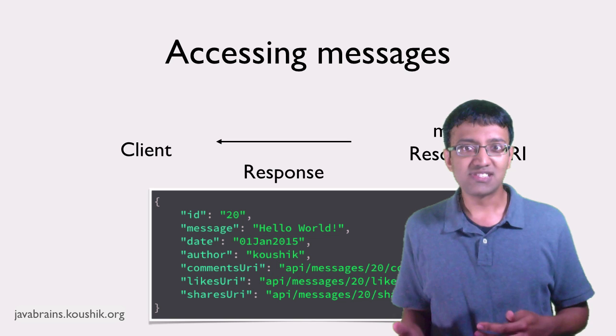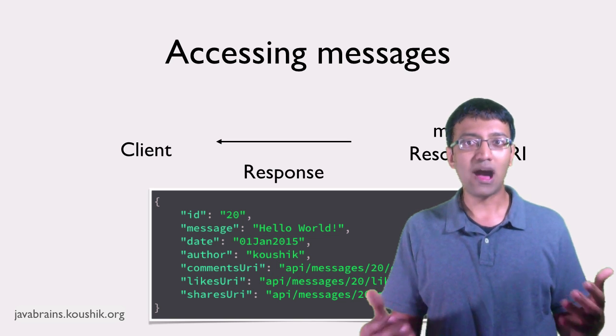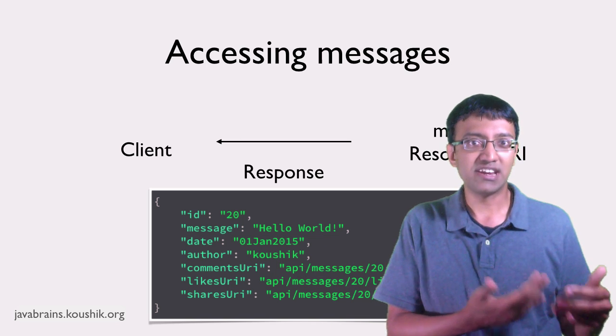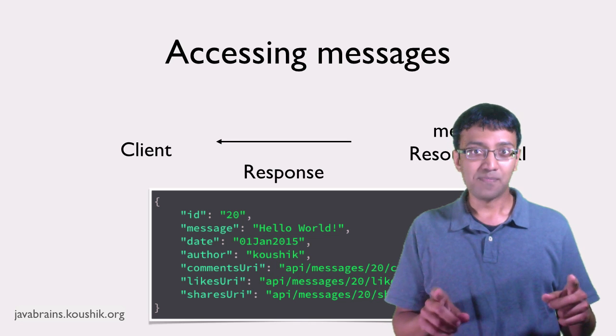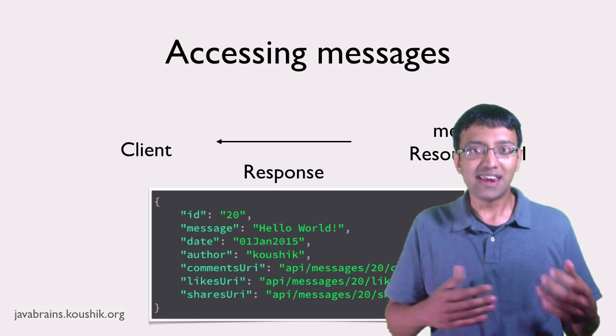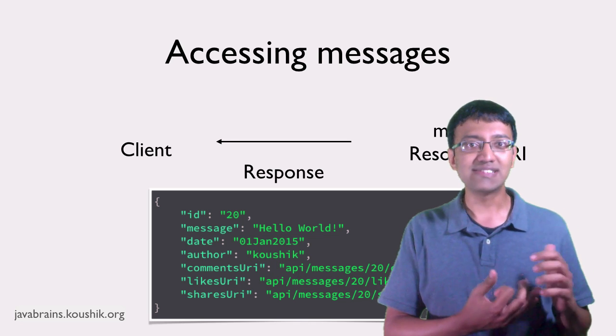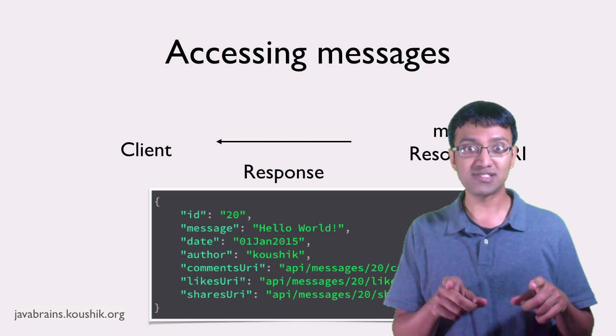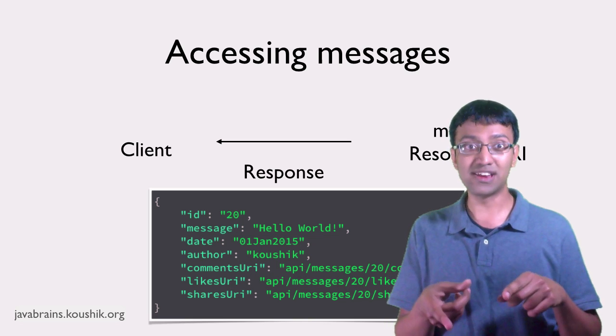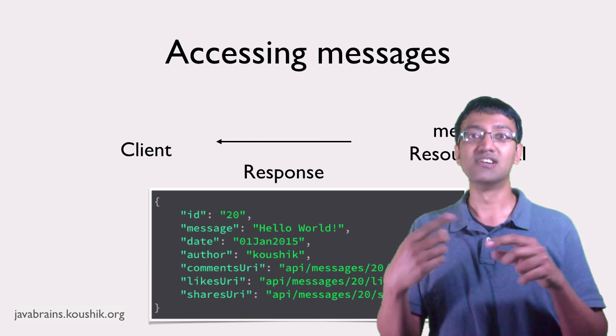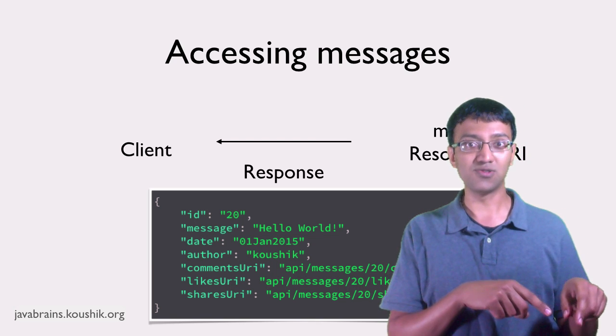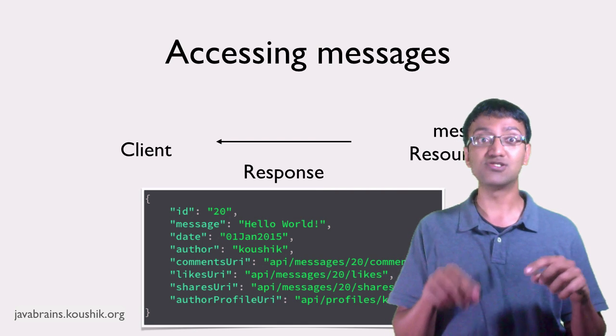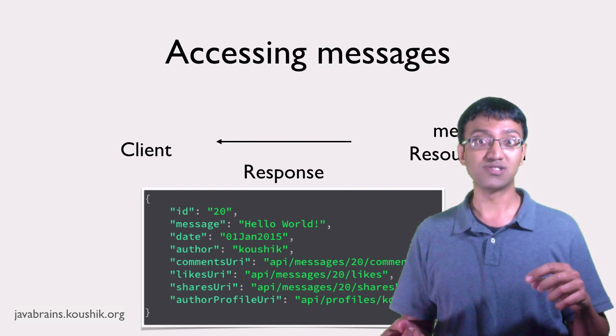So, it's basically the server saying, Hey client, I know you asked for message ID 20. Now, here's the contents of message ID 20. By the way, I'm also throwing in the collection resource URI for comments, likes, and shares for message ID 20. So, if you need a list of all the comments for message ID 20, that's the URI to use. If you need a list of shares, that's the URI to use. If you need a list of likes, that's the URI to use. Oh, and by the way, this is the profile resource URI for the author of the message. If you need more details on the author, this is the URI to use, right?